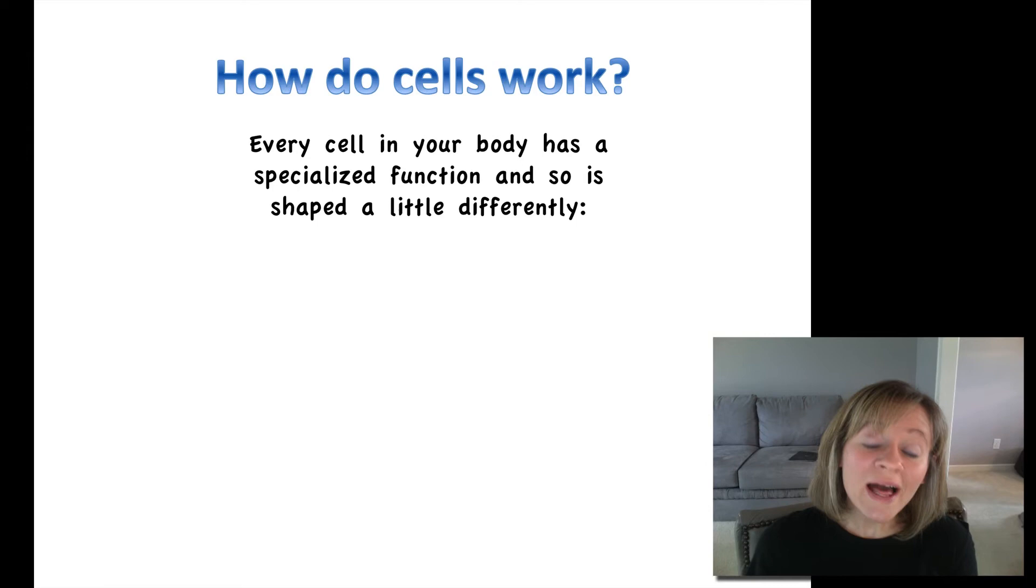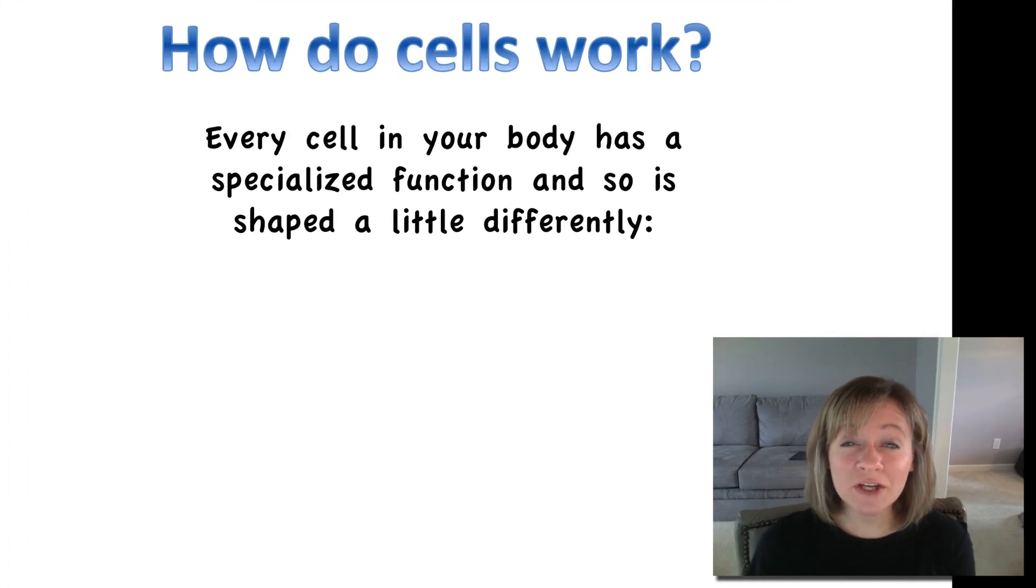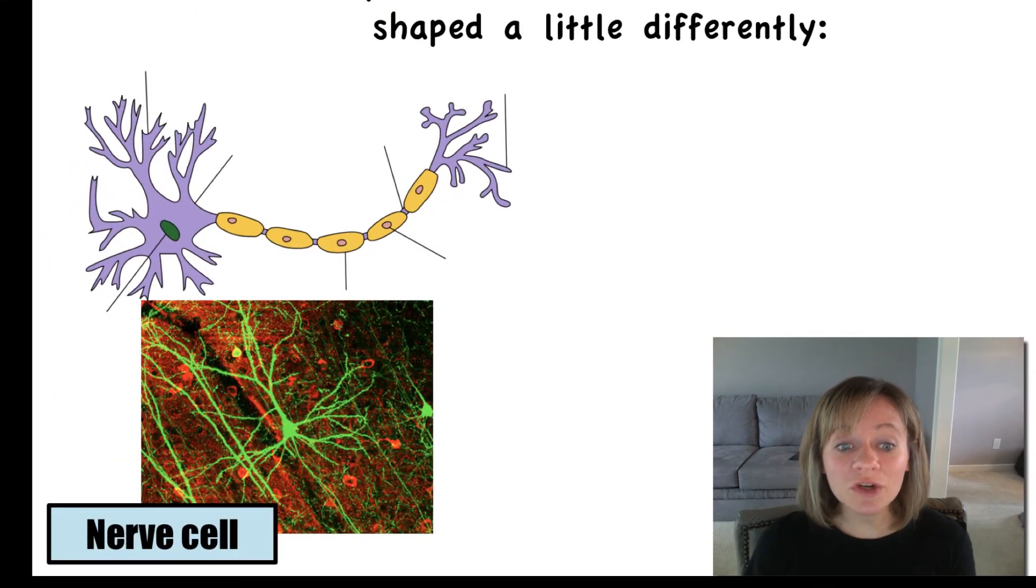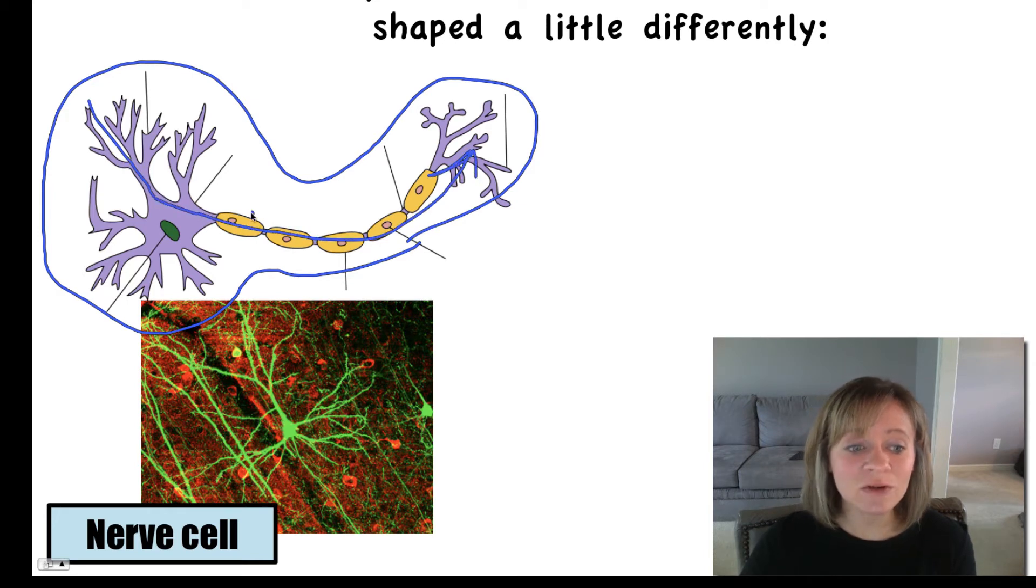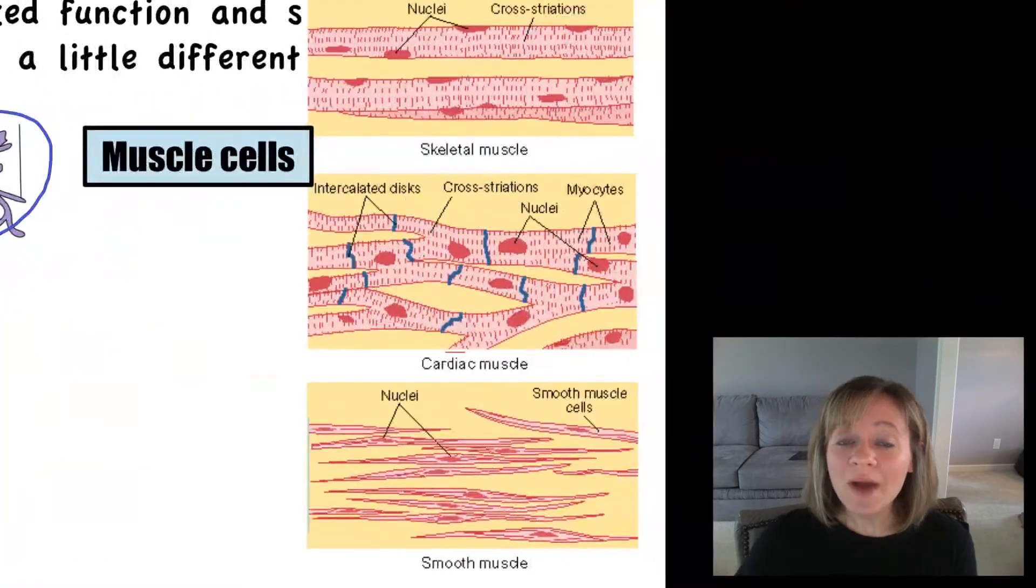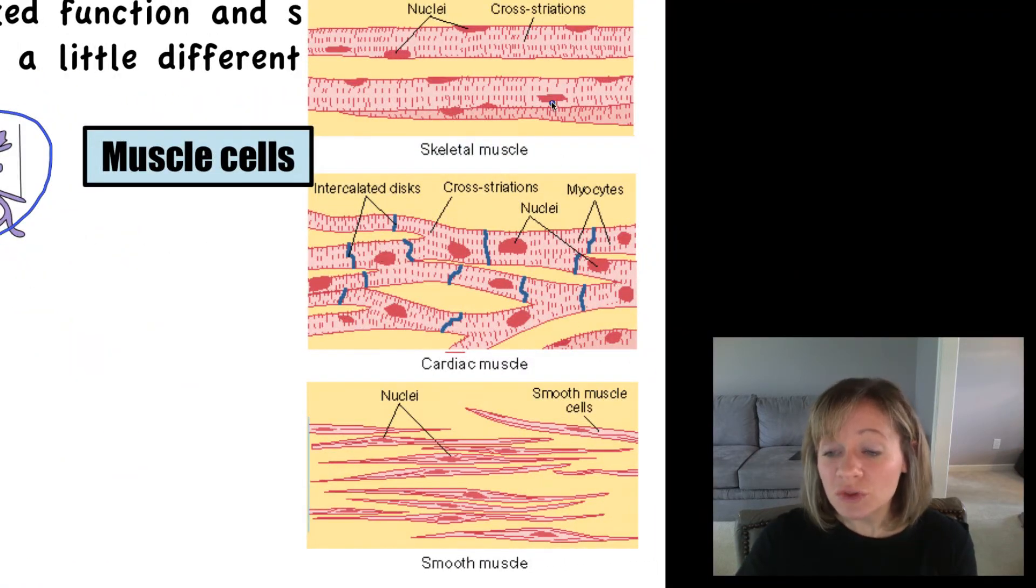How do cells work? Well, every cell in your body has a specialized function, and so it's shaped a little bit differently and works a little bit differently. So I'm just going to give you a few examples. Your nerve cells have a very unique shape, and their shape fits their function, because their job is to get a signal and then transmit that signal down these long axons. You have muscle cells, and so these are three actually different types of muscle cells, skeletal, cardiac, and smooth. And you can see that they're long and thin, they're banded, and that's so that they're flexible and so that they can be strong.